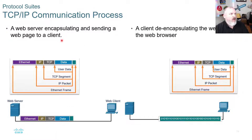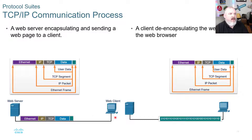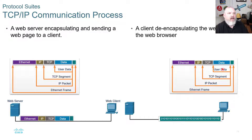The encapsulation process: a web server encapsulates and sends a packet to a web client, which then de-encapsulates it. A web client requests a web page; the web server takes the Ethernet, IP, TCP, and data information, encapsulates it into a packet, and sends it across the wire as ones and zeros. The host picks that up, de-encapsulates it, and reconstructs — based on the ones and zeros — what the Ethernet, IP, TCP, and data information was, then reconstructs the web page.